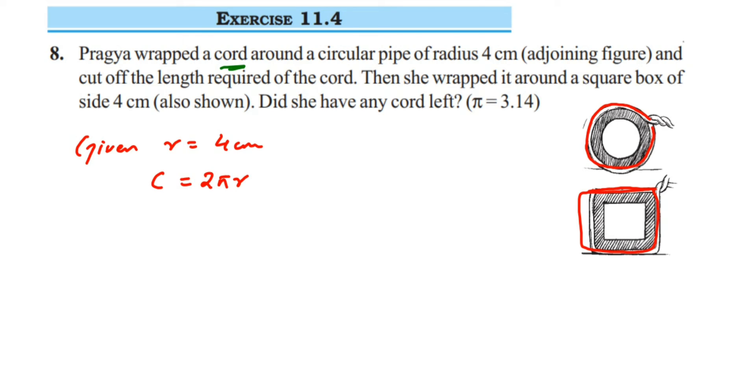Let us substitute: 2 into π value - you can take it as 3.14 or 22/7, here I'm going to take it as 3.14, multiplied by 4. The radius is 4, so when you multiply all these three numbers we'll get 25.12 centimeters. Now this is the length of the cord.